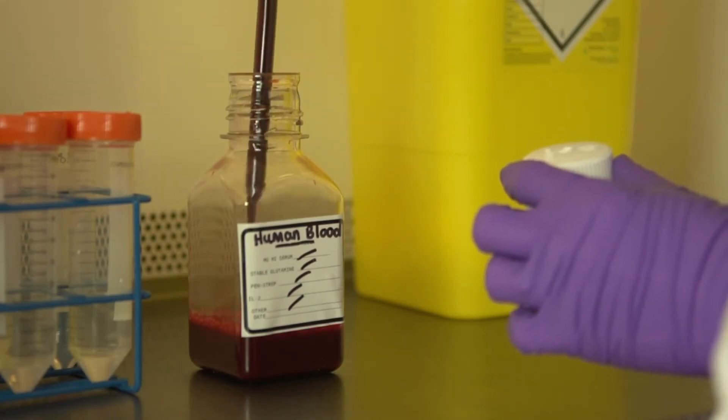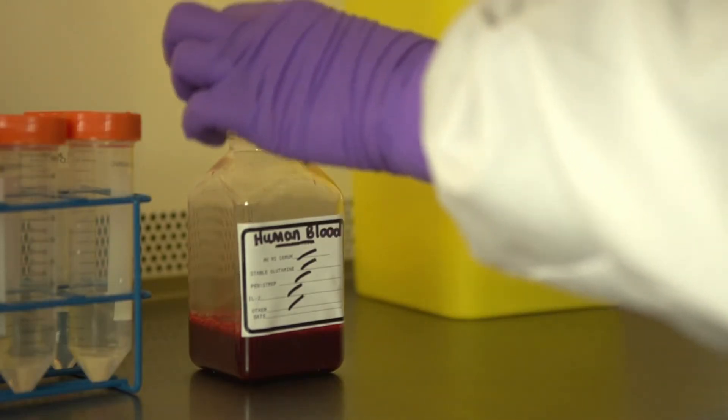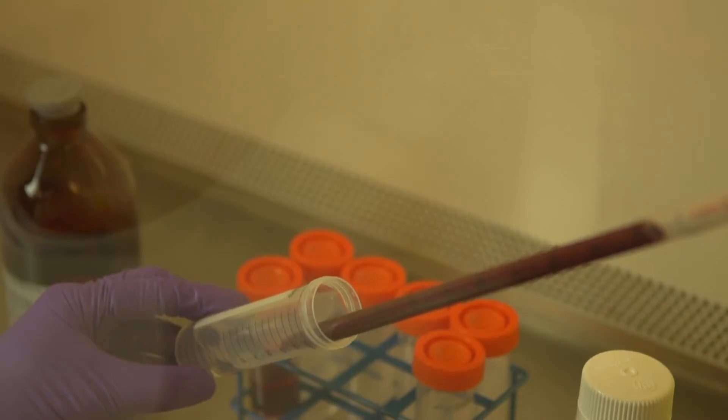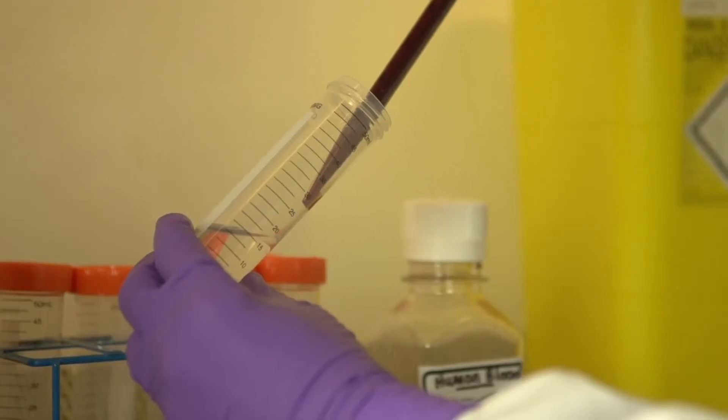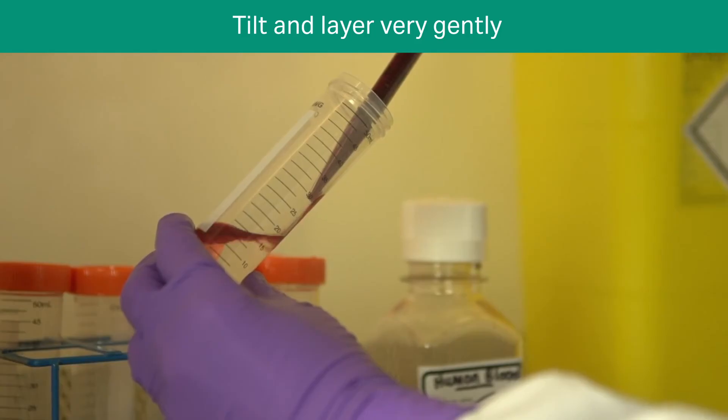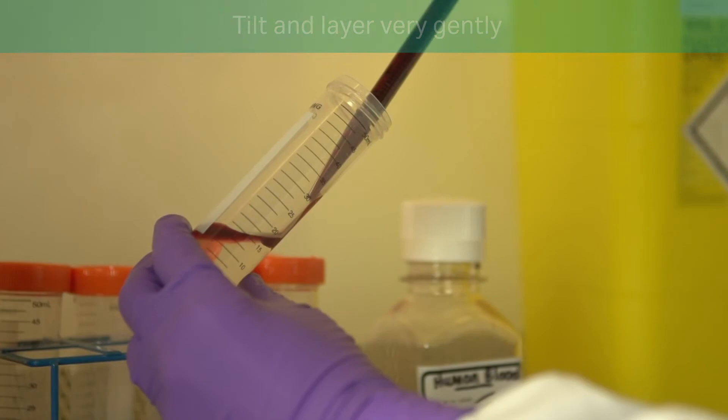Take 25 ml sample of blood. Tilt the tube containing the Phycol and very gently layer the blood on top, taking care not to disturb the interface.